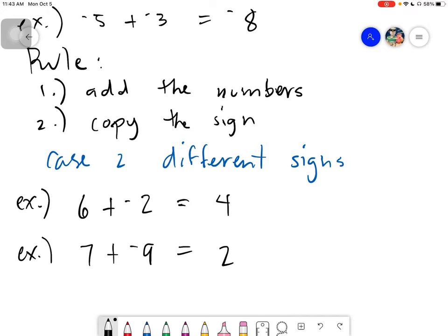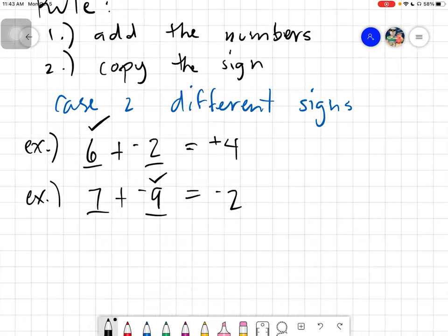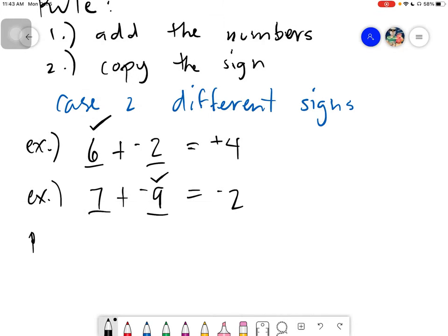And then, what you need to do is you need to copy the sign of the larger number. Which is larger? 6 or 2? So, it's 6. Copy the sign of 6. Which is larger, 7 or negative 9? It's negative 9. So, you copy the sign of negative 9.